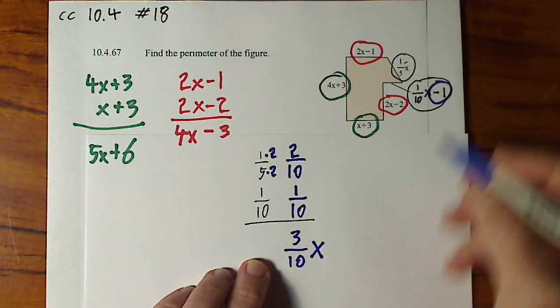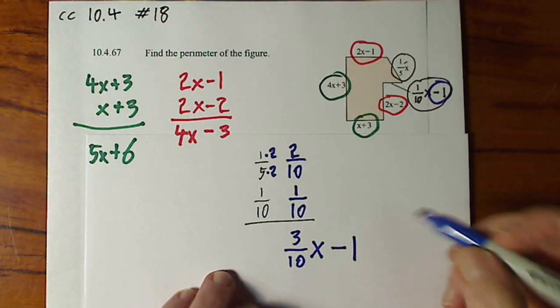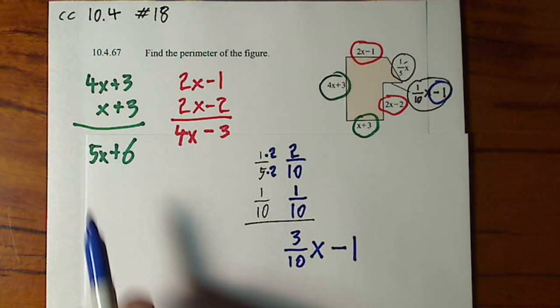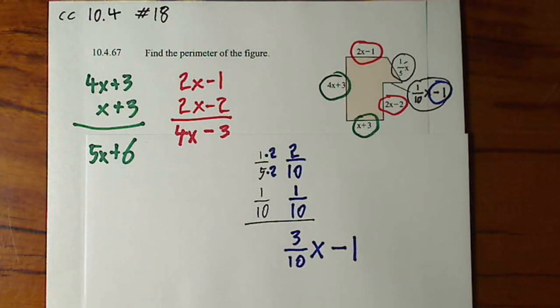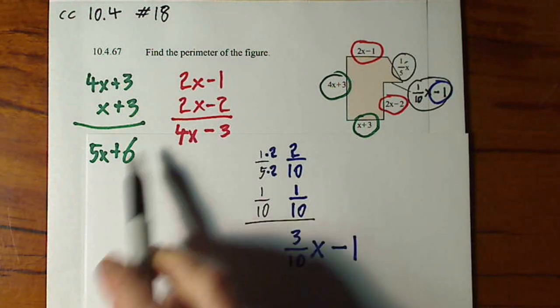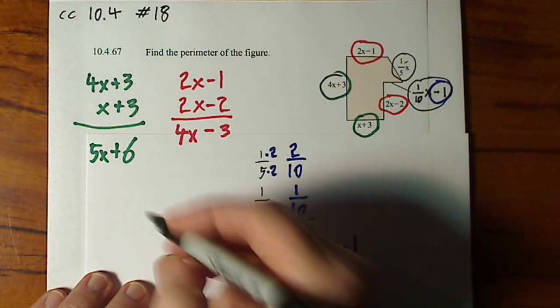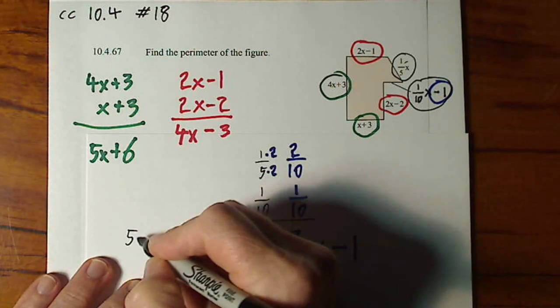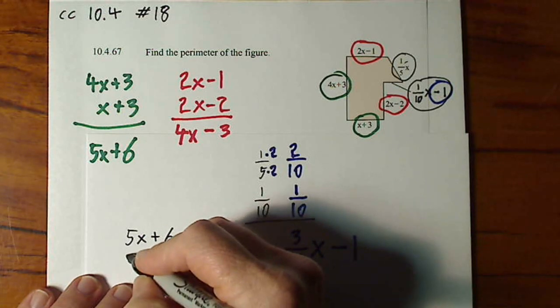Okay, so I have 3 tenths x minus 1. All right, now I have three different binomials that I still need to combine. So let's take the two without fractions and get these together. If I have 5x plus 6, 4x and a negative 3.